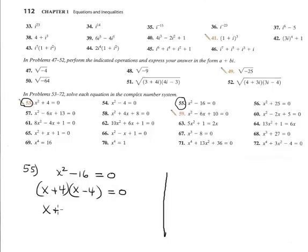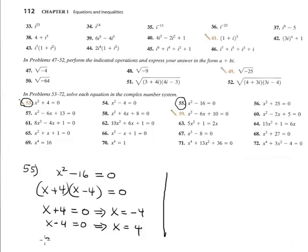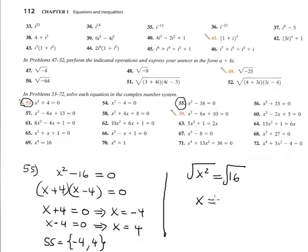Now we have two linear equations. x + 4 = 0 gives x = -4, and x - 4 = 0 gives x = 4. The solution set is {-4, 4}. Another way to solve it: isolate x and apply the square root principle. Square root of 16 is 4, it is real — no i. Plus or minus, and the solution is the same: {-4, 4}. You can select whichever method you prefer.